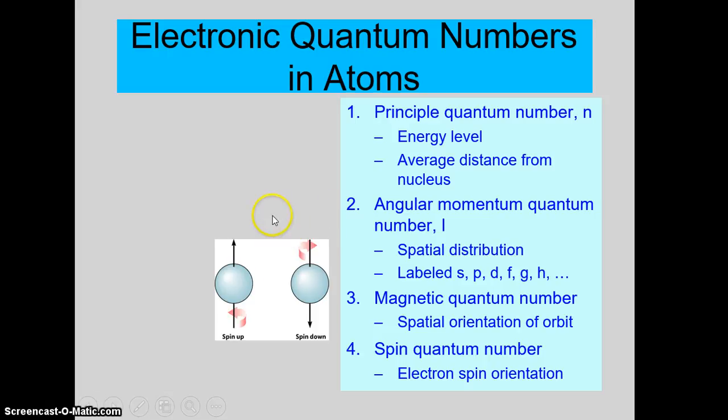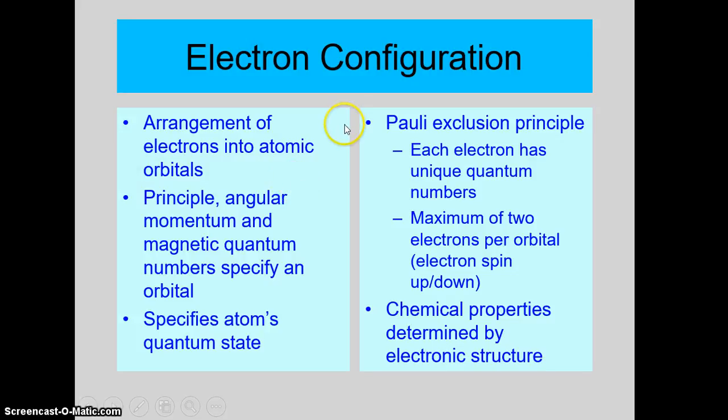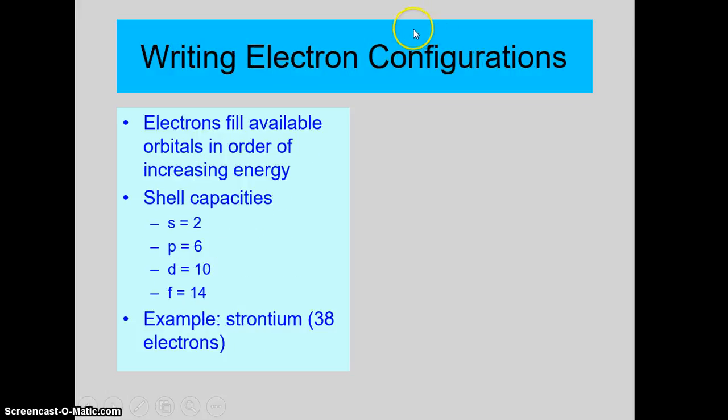It gets very complicated when we start looking at atoms deep into the periodic table, but we don't need to do that. All we're going to do is just use S, P, D, and F. There's spin up and spin down. So this is what's called electron configurations. I'm going to show you how this works.